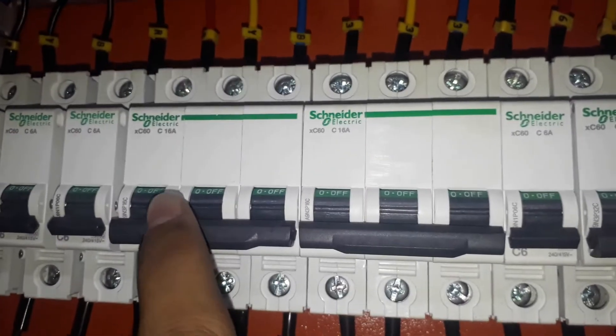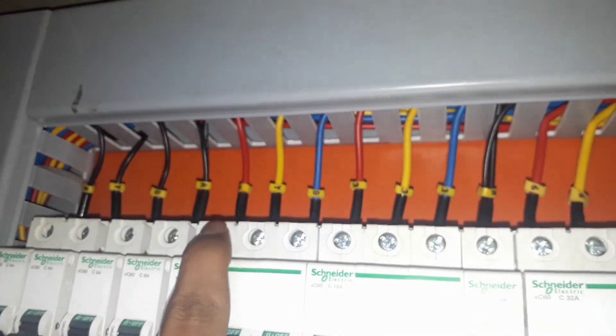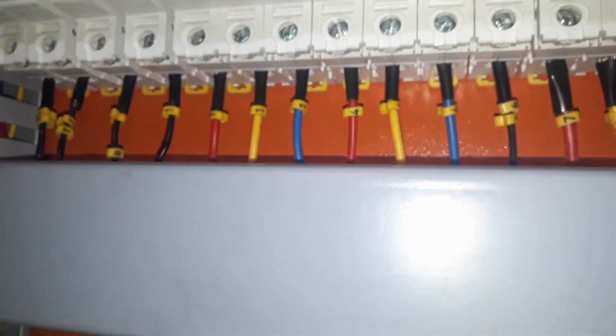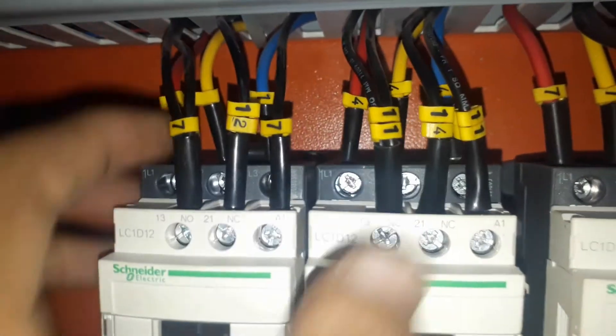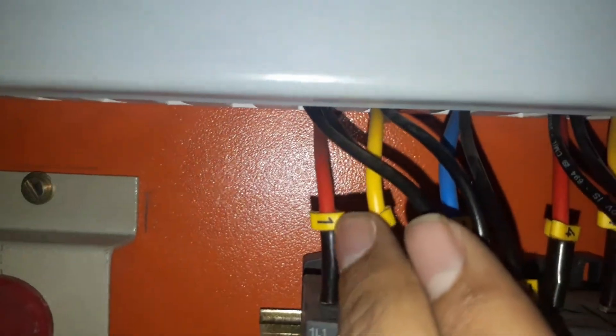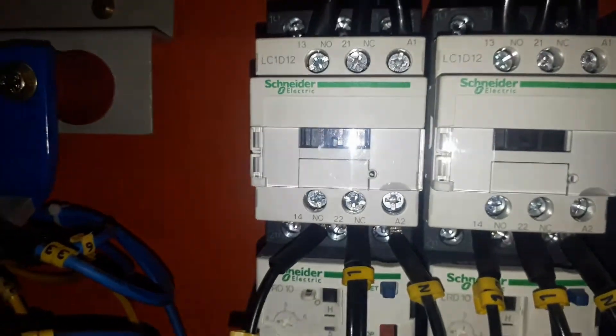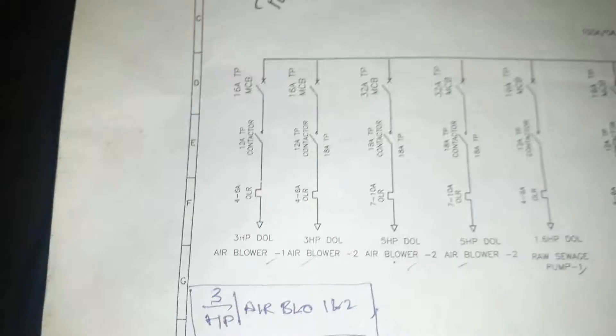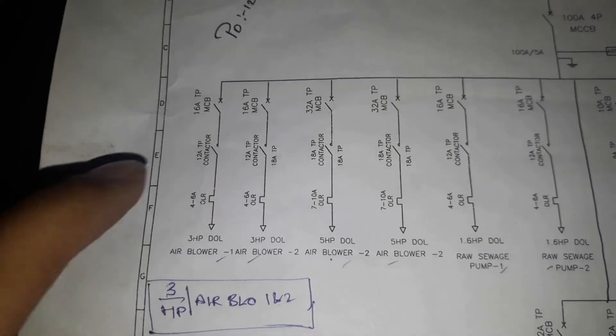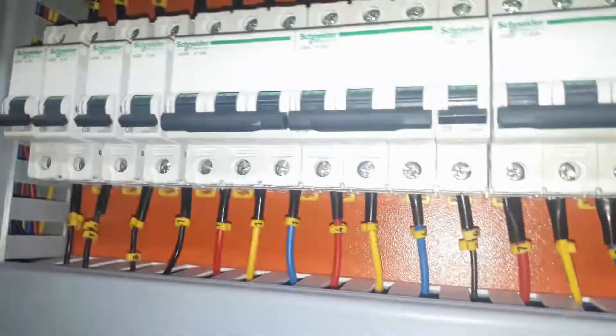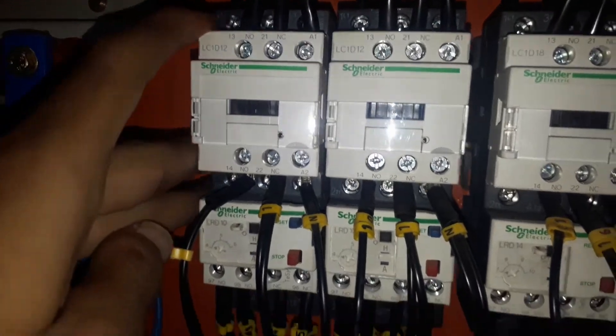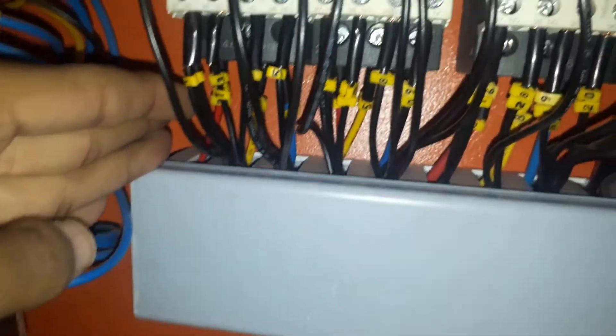After the CTs we have 13 pairs of DOL starters. On the first pair we have a 16-ampere three-pole MCB. Three phases R, Y, B are connected to this MCB and taken out from it, then connected to the contactor — a Schneider contactor. The R, Y, B phases from the circuit breaker connect to the contactor at L1, L2, L3. This contactor is a 12-ampere three-pole unit. From the contactor the output goes to the OLR, which is rated 4 to 6 amperes.